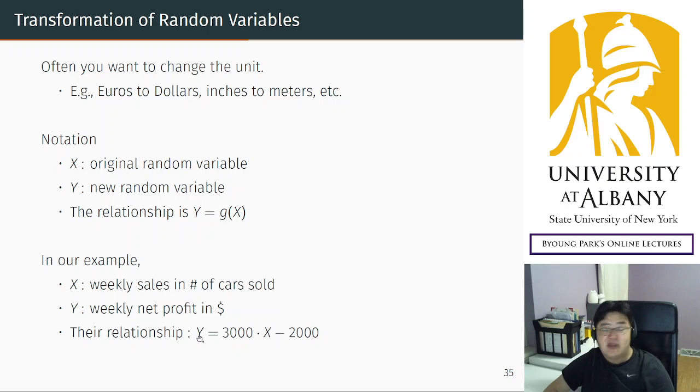In our example, the relationship can be written this way. For each car sold, he makes three thousand dollars, but he always takes two thousand dollars as a fixed salary. This is the relationship between how we obtain the new random variable from the original random variable. We call this transformation of random variables.